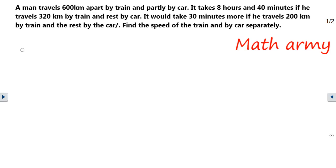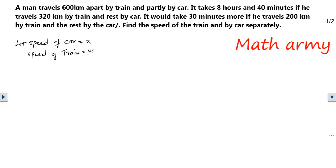There are two scenarios here — case 1 and case 2. Let us assume the speed of the car is x and the speed of the train is y, because we have not been given the speeds but we are supposed to find them. In both scenarios they are traveling 600 kilometers, so distance is equal to 600. The formula is: distance equals speed into time, or time equals distance divided by speed.